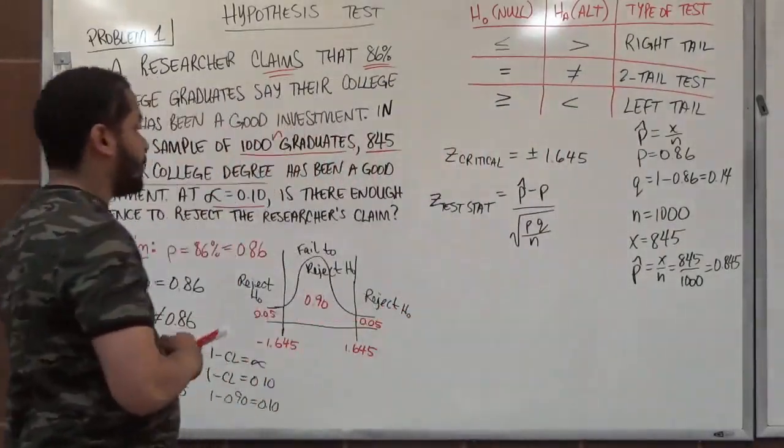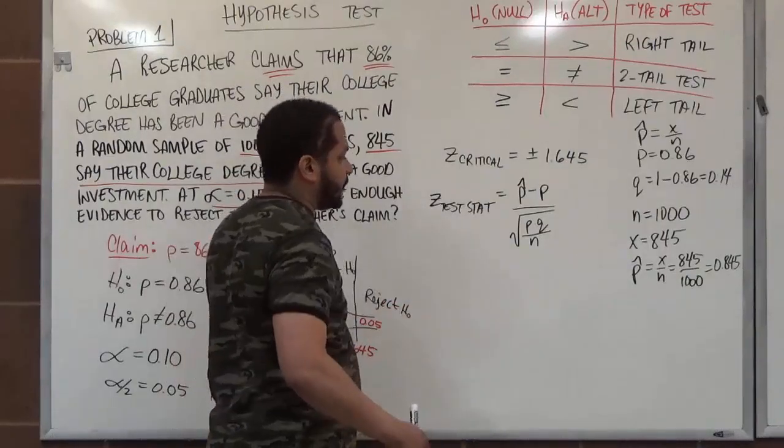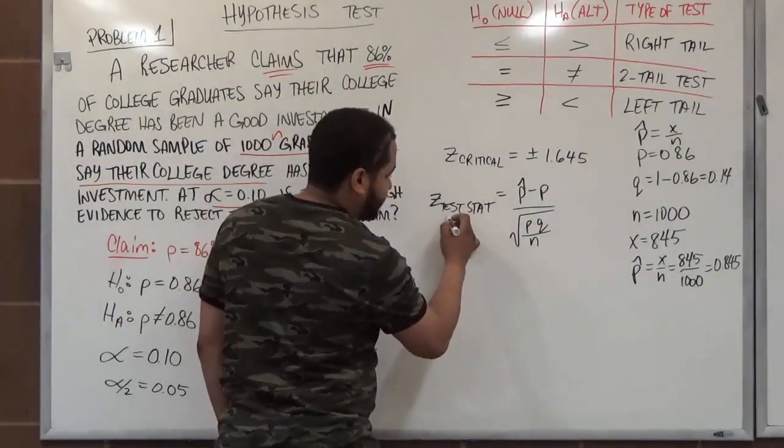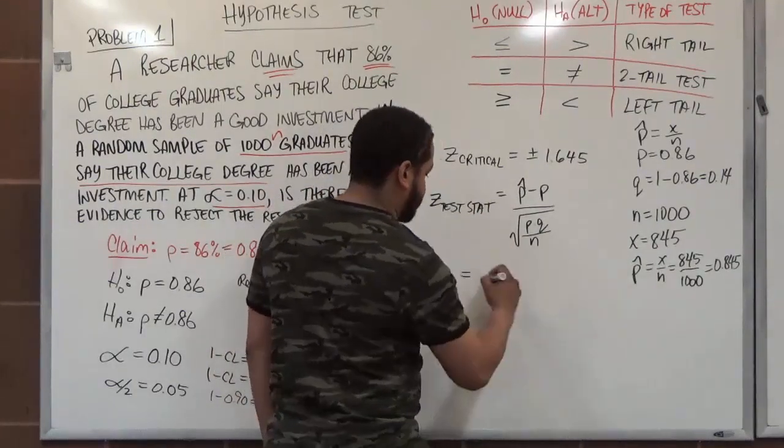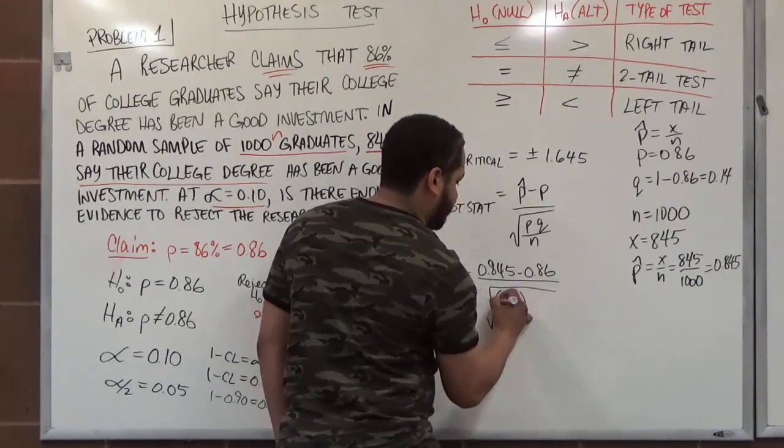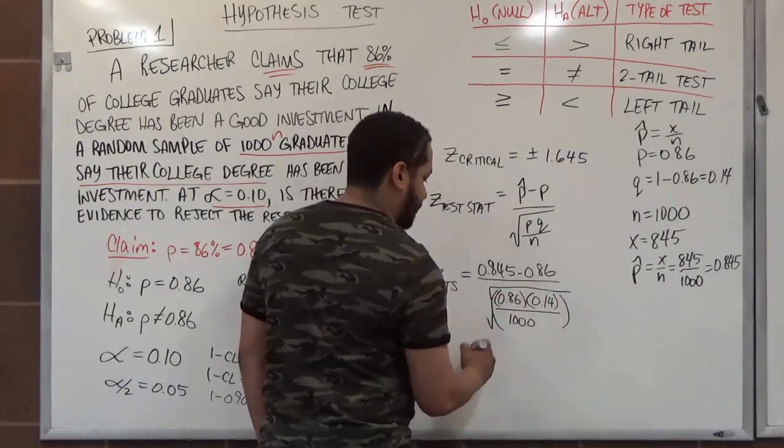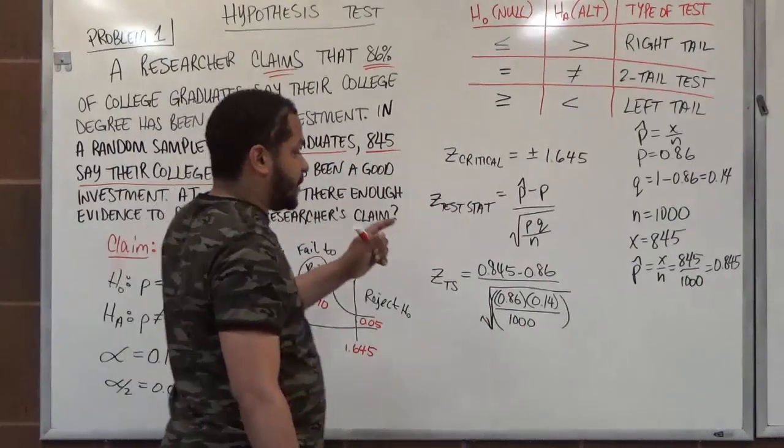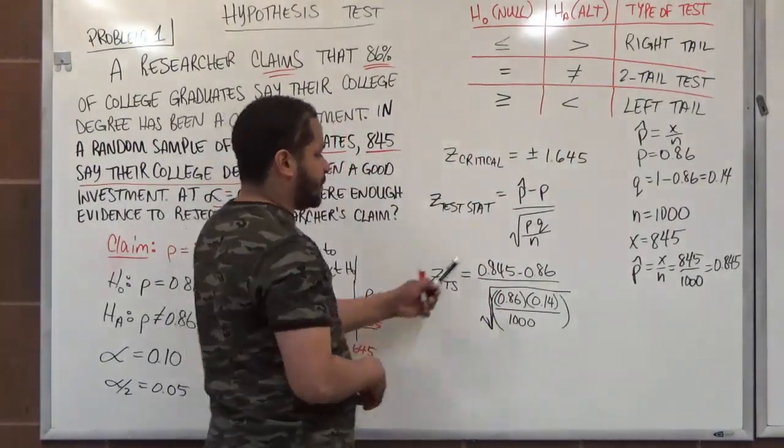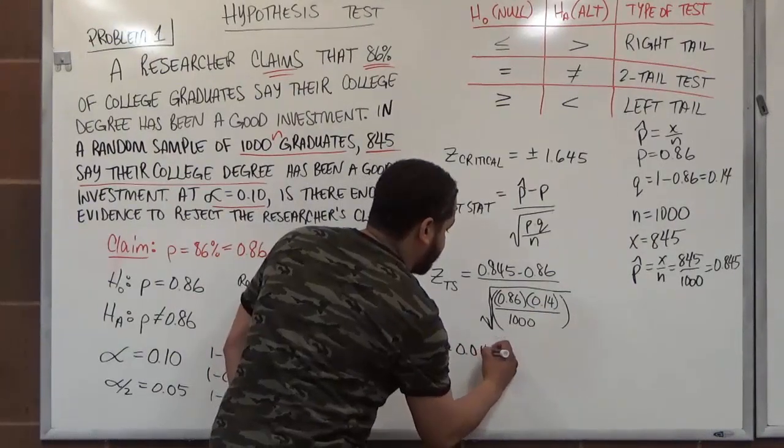Besides this, we will need a calculator and a z-score chart. Make sure you have both of those handy, because it's going to be really important the way you calculate this. Make sure you have a good scientific calculator or a TI calculator to do this. So I'm going to abbreviate this test stat to TS. So we have z of TS equals the p-hat, which is 0.845 minus 0.86 divided by the square root of 0.86, our p-value times our q-value of 0.14 divided by 1,000. Now be careful when you're doing this, because you should have all these values in parentheses and the square root outside of it on your calculator. The best way to do this, do the top and then do the bottom, then divide the top with the bottom using the answering key on your calculator.